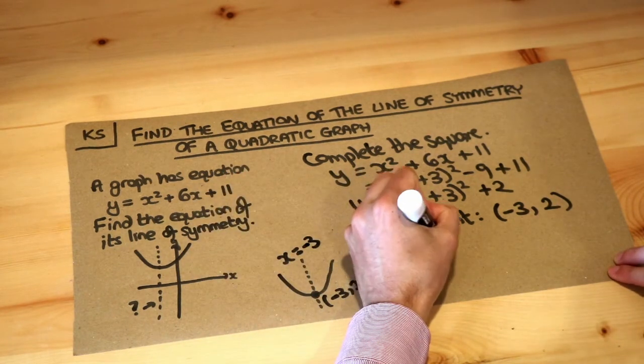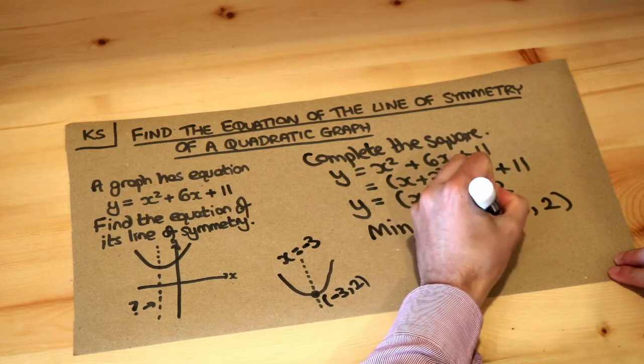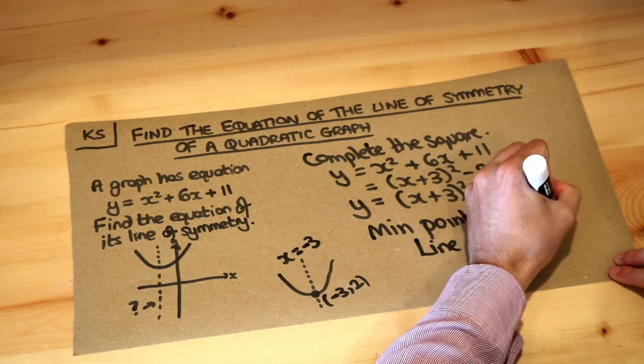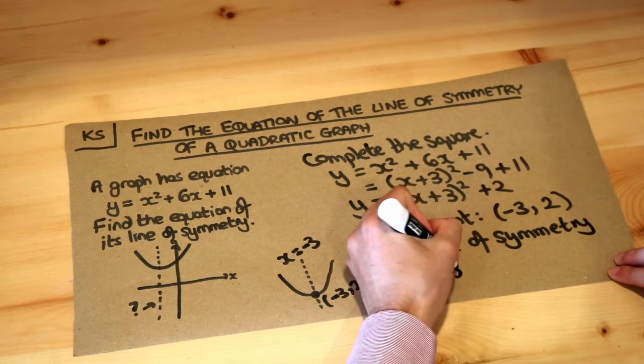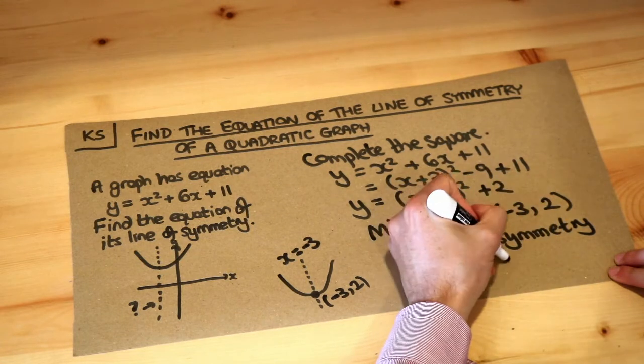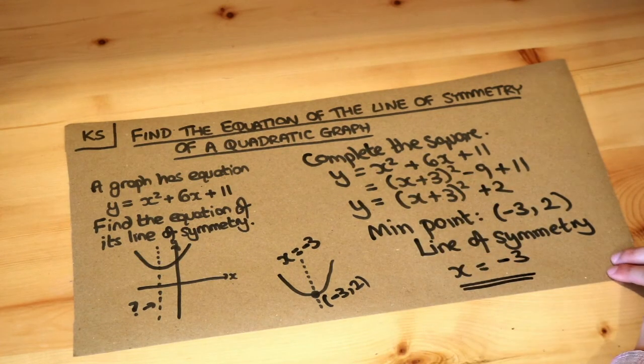So therefore the equation of the line of symmetry will just be x equals minus 3, and that's the final answer.